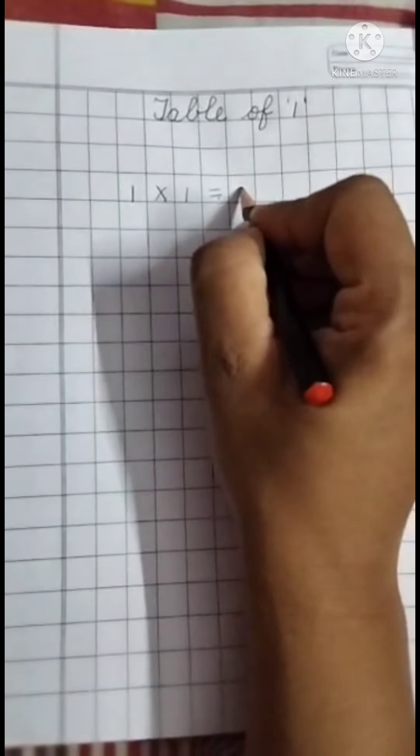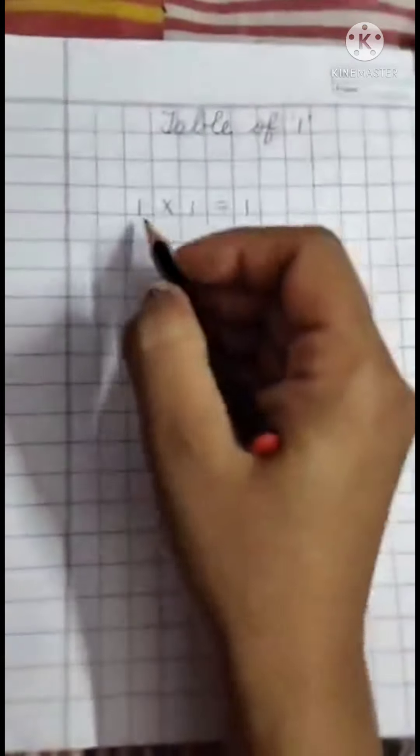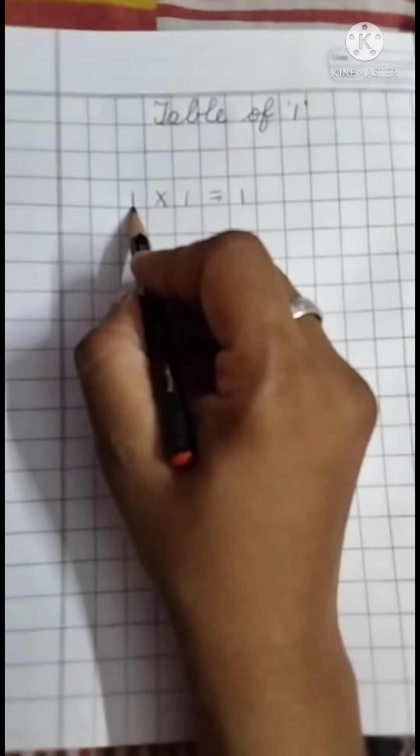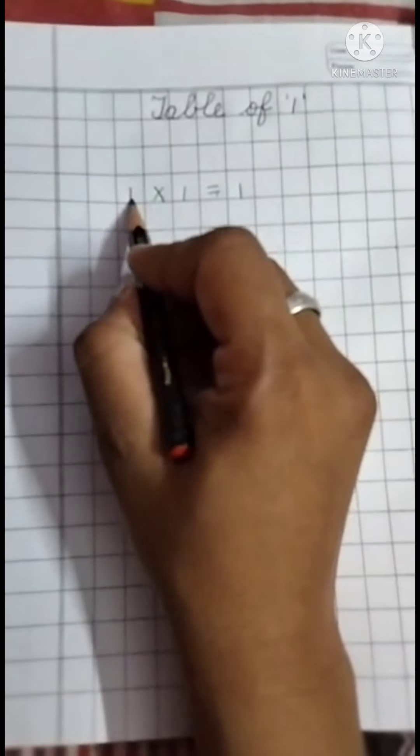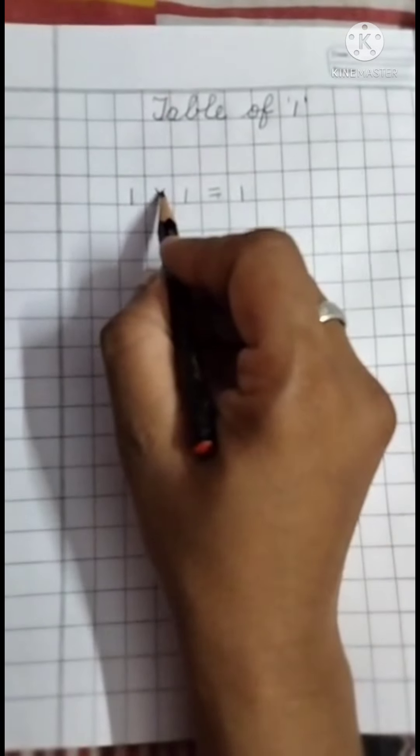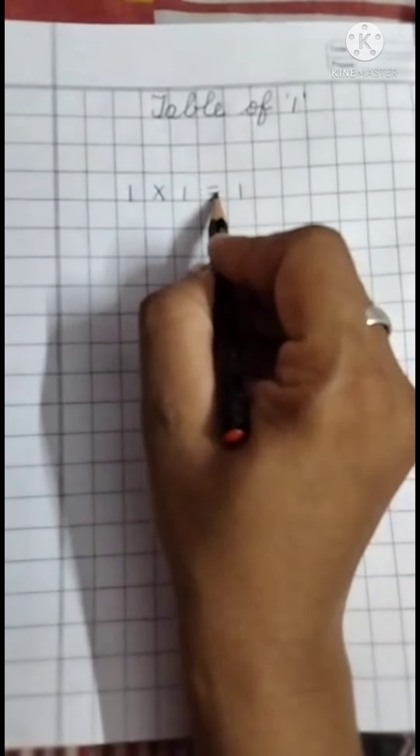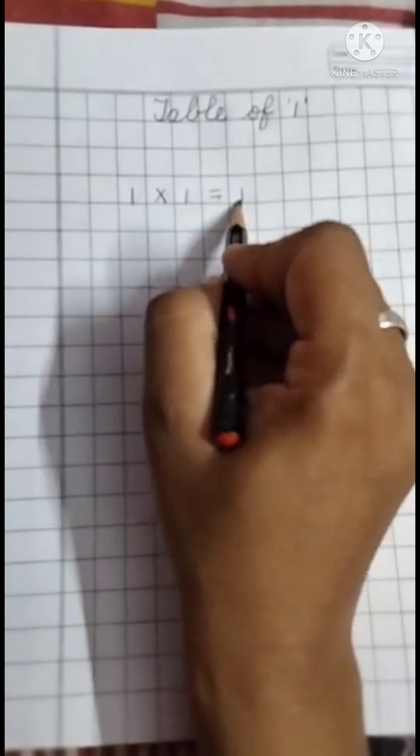And then write here one. You have to speak like this. One. Multiply one equals to one. One. One one is a one.